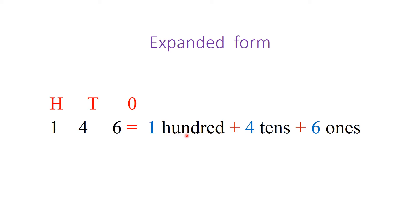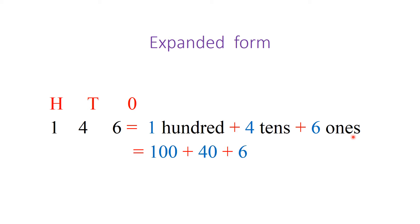Plus, 4 is in the 10's place — that means 4 tens, so we write 4 tens. Plus, 6 is in the 1's place — 6 ones. We can also write this as 100 plus 40 plus 6. That is, 100 + 40 + 6.